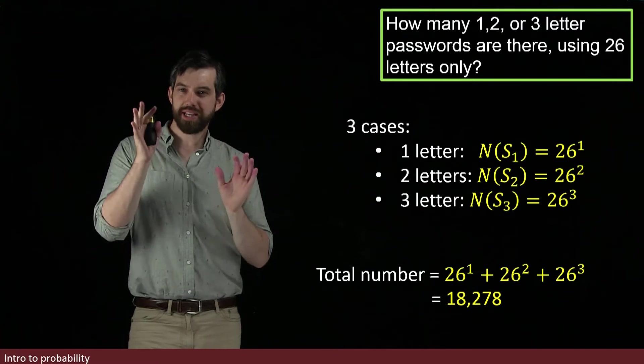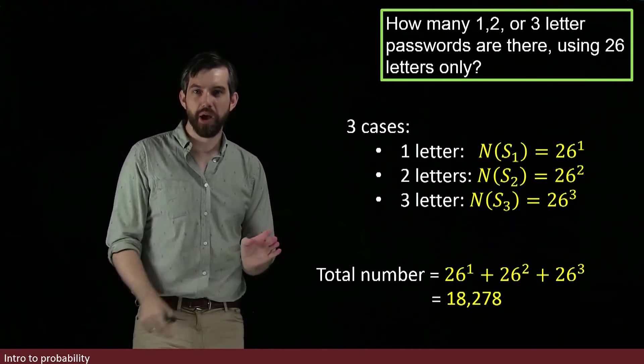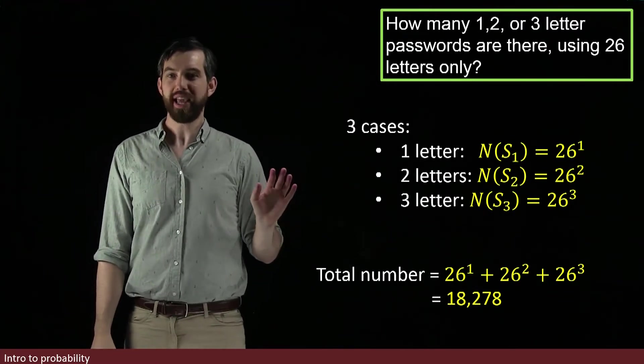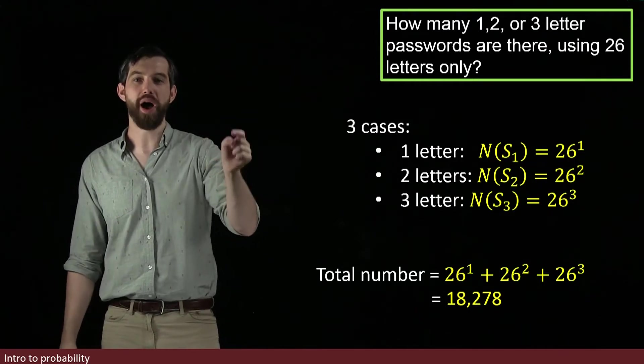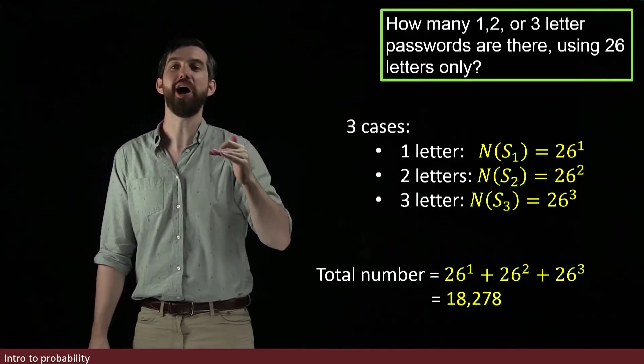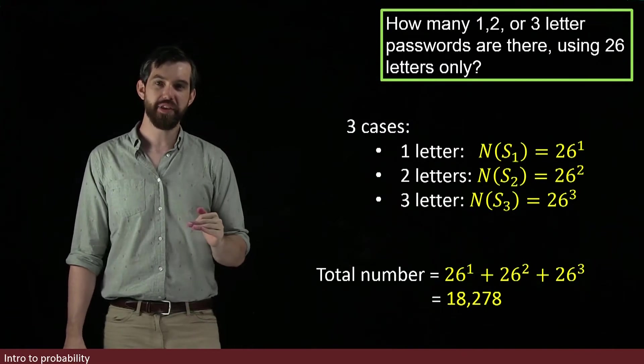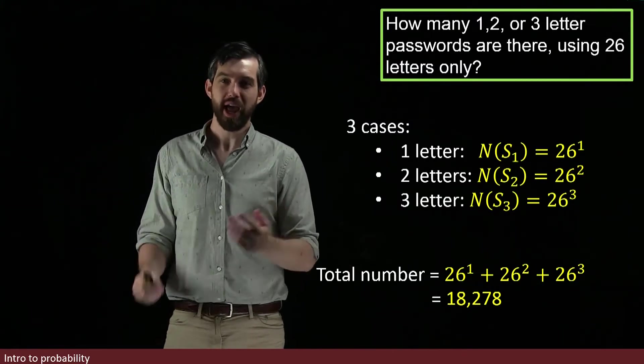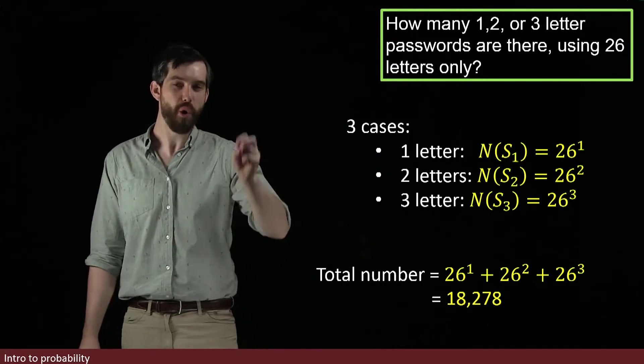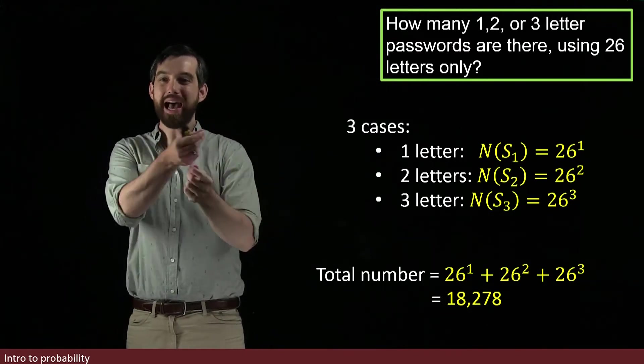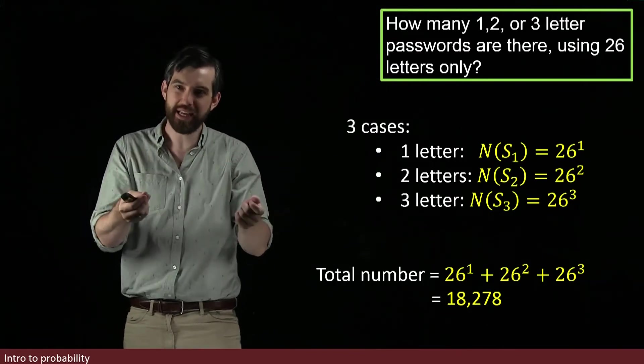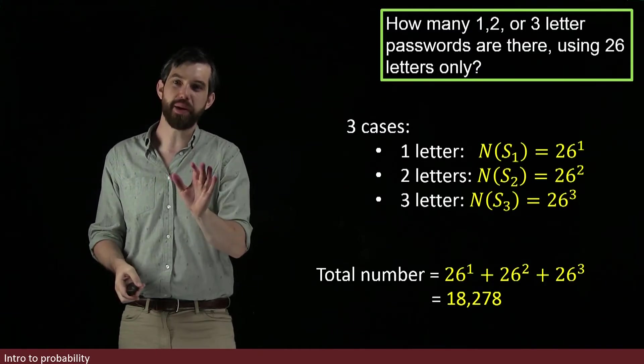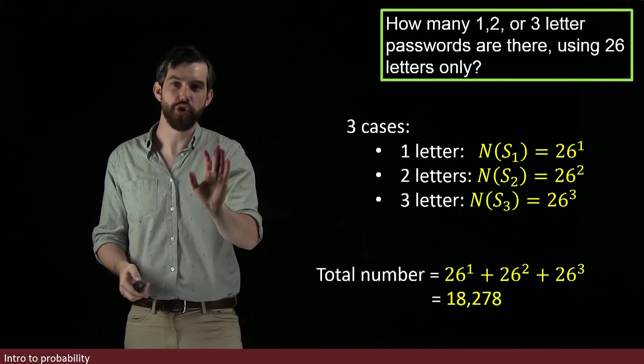Now, what was key about this example was that the three different cases, and I called them S1, S2, and S3, sort of three different sub-sample spaces, that those were completely independent. They didn't overlap. Every password is either one letter long or it's two letters long. There's no passwords that overlap here that are both cases.